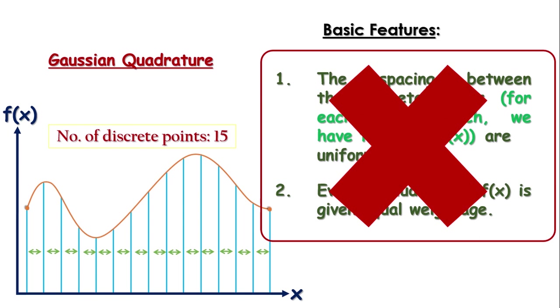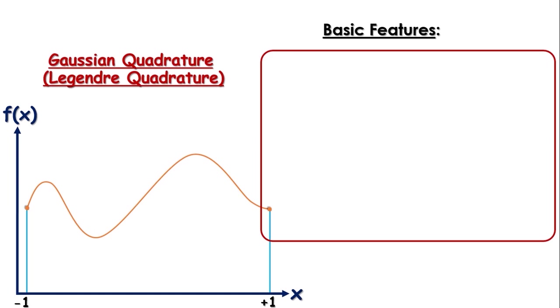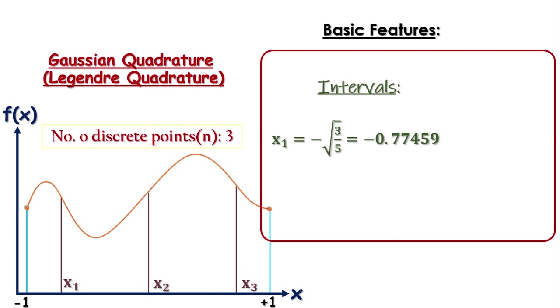Just to give you an idea of non-uniformity, in this method, for n equals to 3, and endpoints being minus 1 to plus 1, x1 equals to minus root under 3 by 5, which is actually equals to minus 0.77459, x2 equal to 0, and x3 equal to plus root under 3 by 5, which is equals to plus 0.77459. Therefore, as we are doing the integration from minus 1 to plus 1, clearly the spacing is unequal. And also, the weightages at each point are not the same. For example, weightages at points x1 and x3 are 0.55555 and at x2, the weightage is 0.8888.